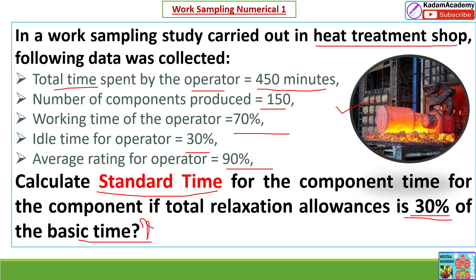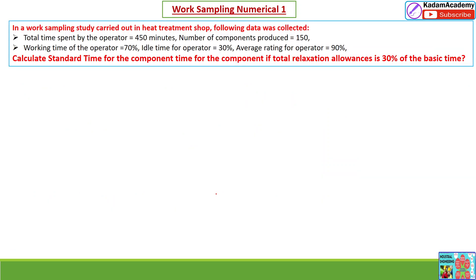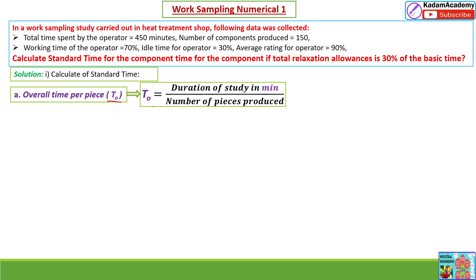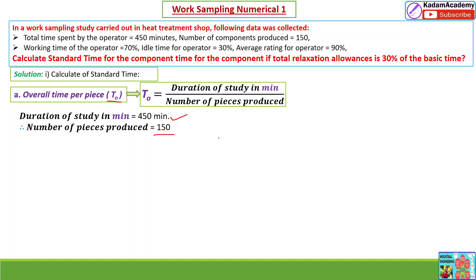We have to find out the standard time following a set procedure — a separate video is available on how to find standard time using work sampling. First, we find the overall time T_o. T_o is calculated by the formula: duration of study in minutes divided by number of pieces produced. Duration of study is 450 and number of pieces produced is 150.